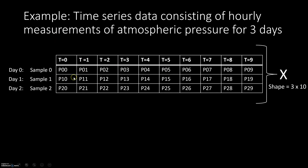So in this data, we have three samples. What we are doing is for three consecutive days, we are collecting pressure measurements for 10 consecutive hours. So T0, T1, T2 — let's say these are 12 p.m., 1 p.m., 2 p.m., 3 p.m., and so forth — and we are collecting the pressure measurements at these hours for three days. So we have three samples in our dataset, one for each day. The shape of this entire dataset is 3 by 10 — three rows, three samples, and for each sample we have 10 data points. If you feed this data to the Keras LSTM layer as-is, what you are going to get is an error.